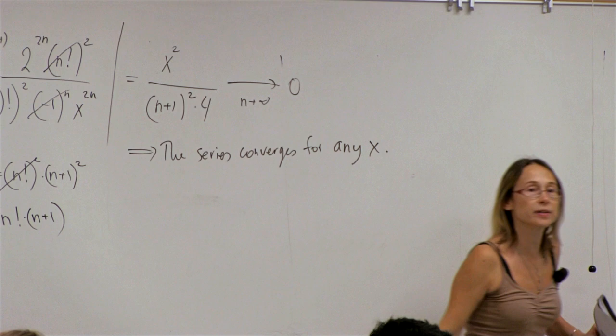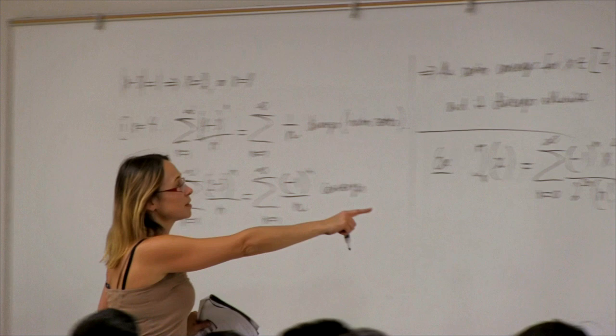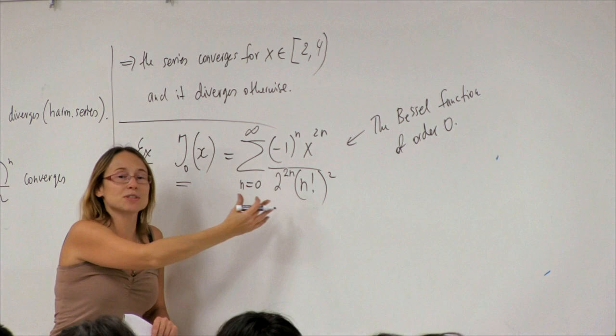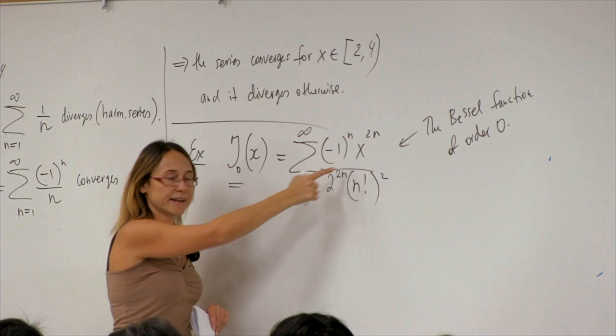This is actually very good: it means the series converges for any real x. Going back, this is the definition of this function. You can see it's written as a function of x — this is its name because it's very common in science. It describes many things and can be plotted as a function of x.